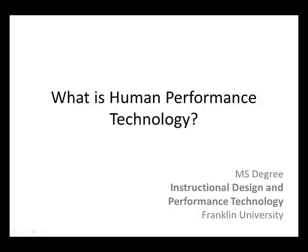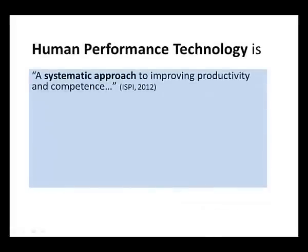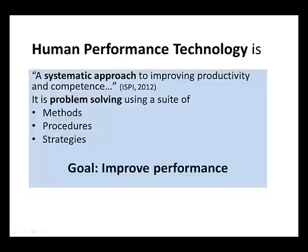First, let's define human performance technology. It is a systematic approach to improving productivity and competence. It is problem solving using a suite of methods, procedures, and strategies. It's important to note that human performance technology takes a very holistic look at performance and can use many different kinds of analyses and interventions to really improve performance. And that's the goal of human performance technology — to improve performance.